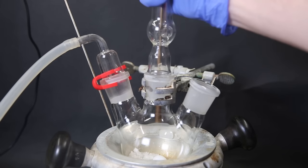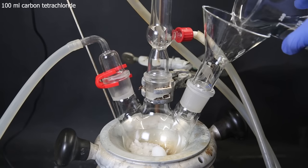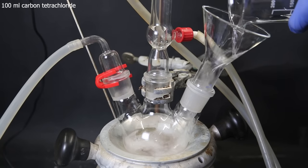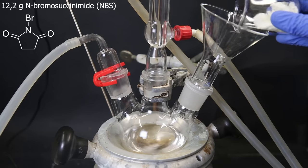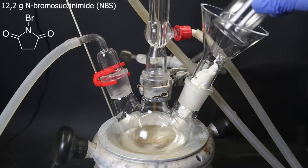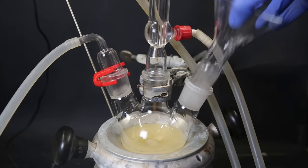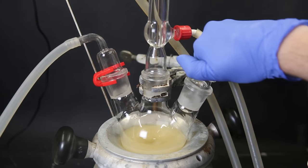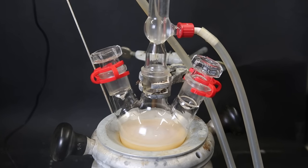I then attach a gas adapter with an argon line, a condenser, and a funnel. Through the funnel, I add in 100 mL of carbon tetrachloride and start stirring to dissolve the crystals. On top of that, I add in 12.2 grams of N-bromosuccinimide, which is the brominating agent for this reaction. Then I remove the funnel and replace it with a stopper. I start heating the mixture to a reflux and remove the argon line. I then leave it to reflux for 3 hours.